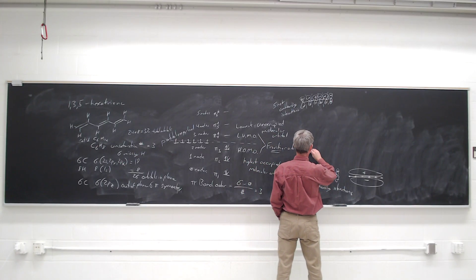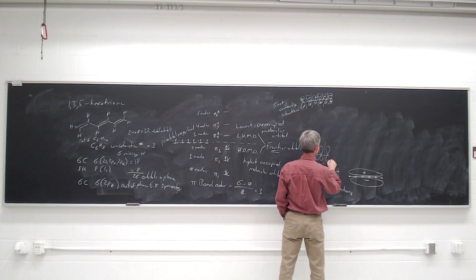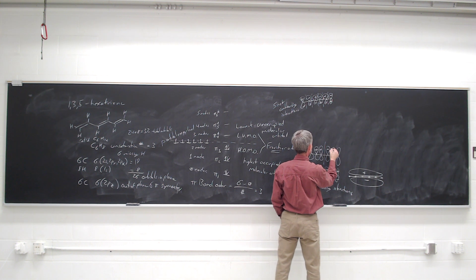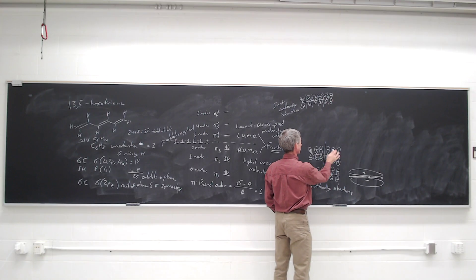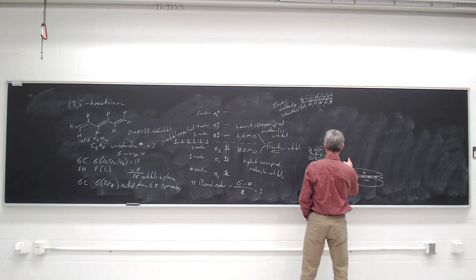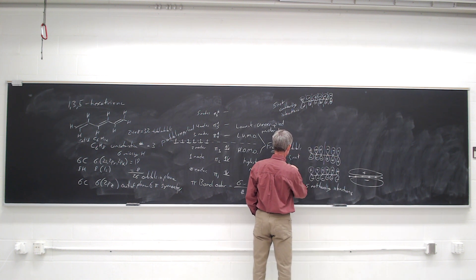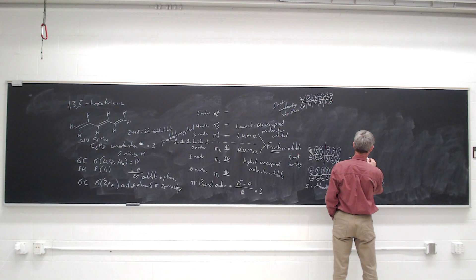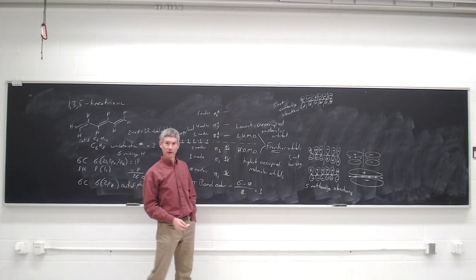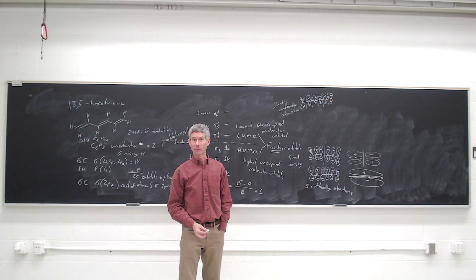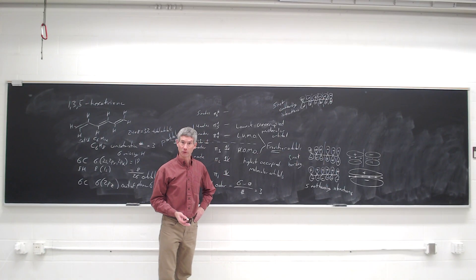For pi-2, if we put one node, we bisect the molecule with a node right down the middle. We will have three orbitals interacting constructively on the left and three constructively on the right, giving four bonding and one antibonding — so three net bonding interactions. That orbital is bonding with respect to carbons 1-2, 2-3, antibonding with respect to carbons 3-4, then bonding with respect to 4-5 and 5-6.